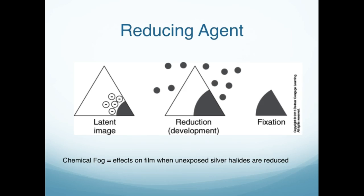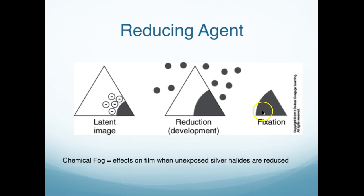Here's a little diagram. We can see the latent image just waiting, sitting at the spec gate. The reduction happens — the developer comes in and develops the density, and then we have to put it through the fixer to fix that density onto the film. Note that chemical fog affects the film when unexposed silver highlights are reduced.